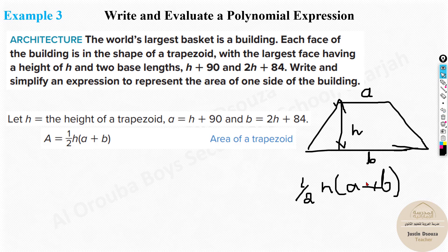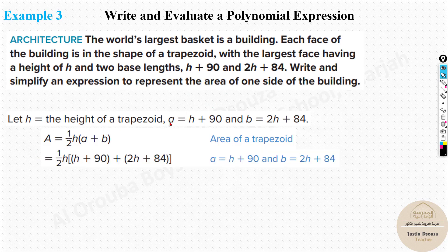Next what? Use the formula half H into A plus B. Now, you need to substitute half into H. That's fine. What is A? It's H plus 90 plus 2H plus 84.